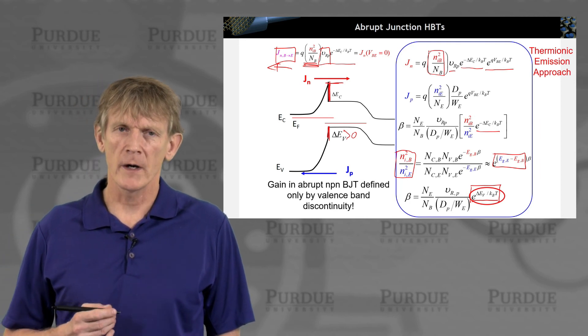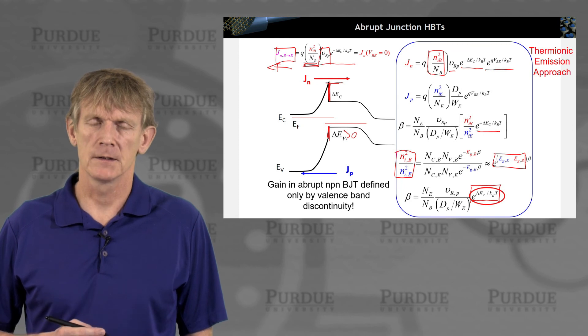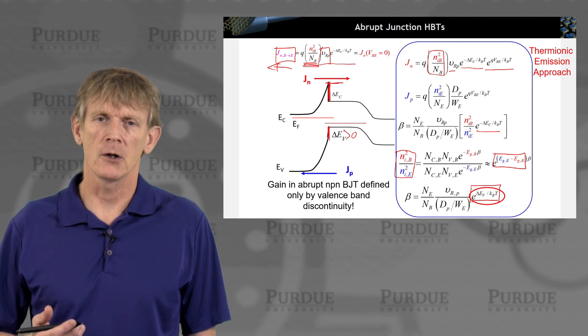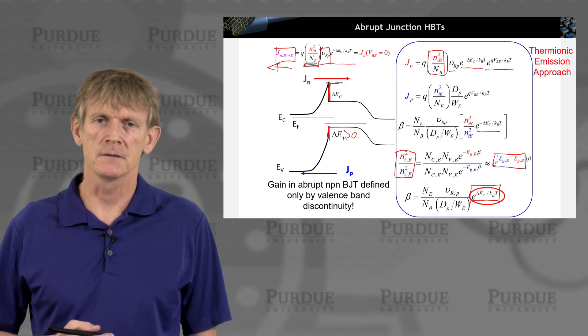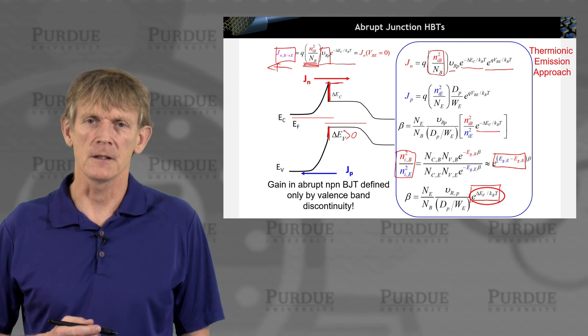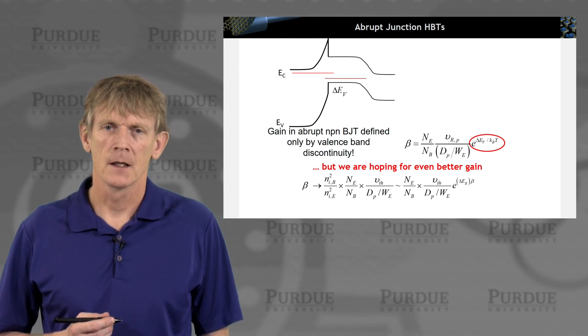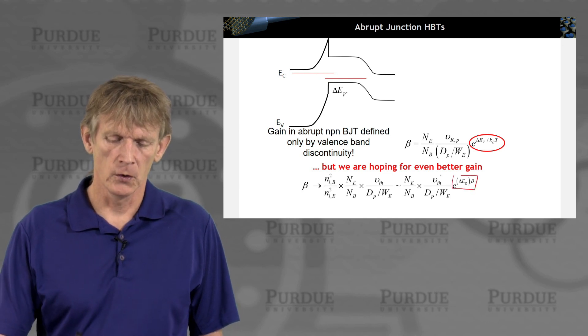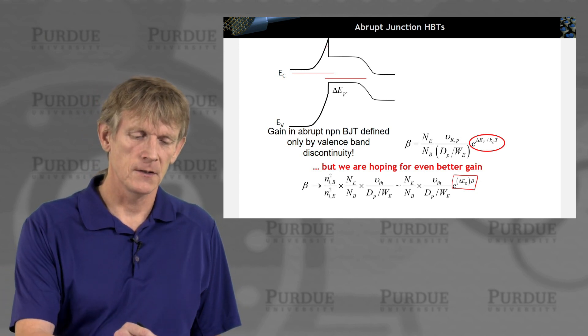In a way, we'd like to be greedy. We would like to have the whole difference in the band gap be advantageous for the electrons. But if we just have this abrupt junction in this NPN configuration, the only gain we get is from the delta EV. To get the full gain, we need another junction where we have the full gap, not just the partial gap.